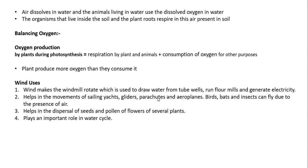Animals that live in water use oxygen dissolved in water. Animals that live in soil and plant roots use air present in soil for respiration. Balancing oxygen: it is produced by plants during photosynthesis and consumed by plants and animals during respiration, as well as for burning and other oxidation. Plants produce more oxygen than they consume, so overall they are producers of oxygen.